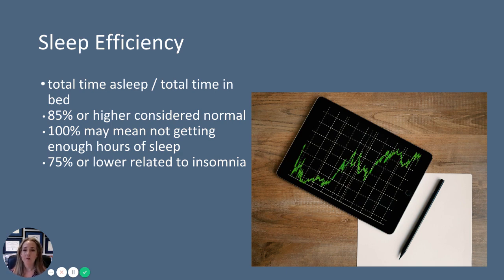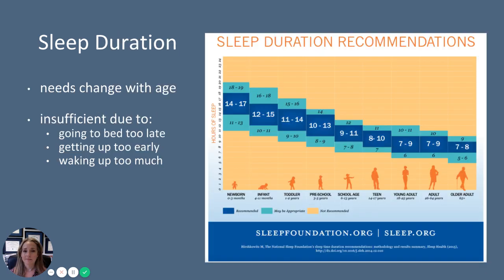If you have 75% or lower sleep efficiency, that is typically some sort of insomnia. What about sleep duration? This is always a question — how many hours of sleep do I need a night? I've put up this chart here because it's really interesting to show how the needs for sleep change with age. In this chart, the dark blue is considered the normal, recommended range for different ages.